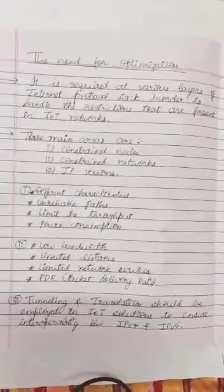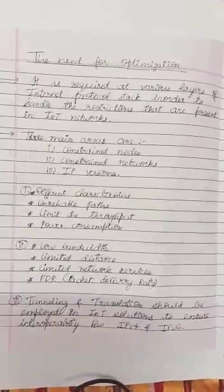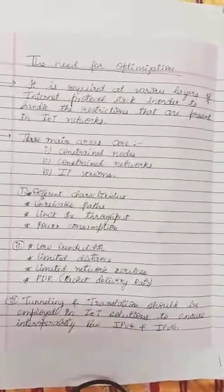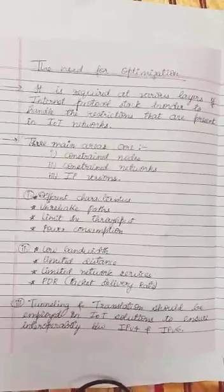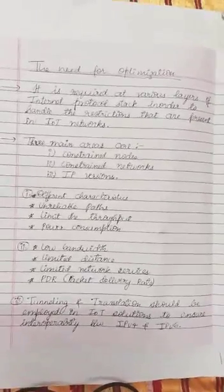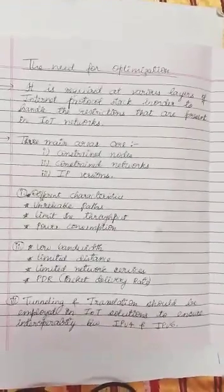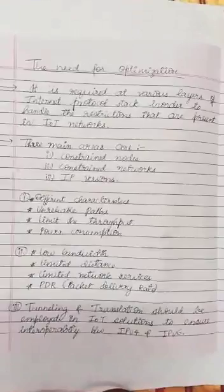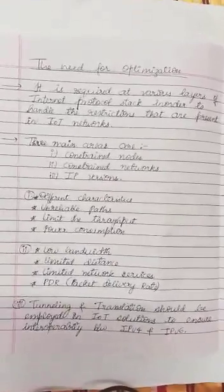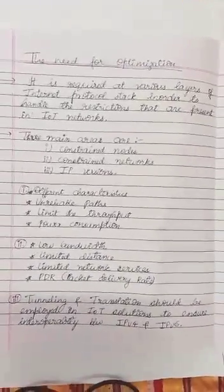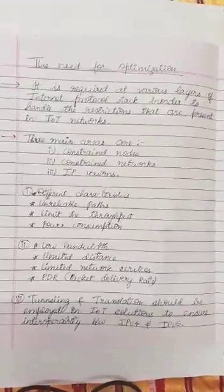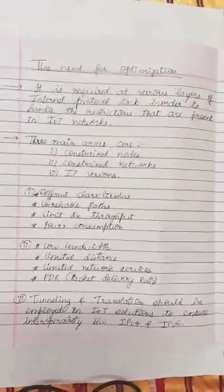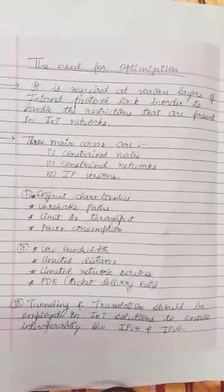Lastly, there is the power consumption issue. As you all know, IoT devices are already battery powered, and that battery will last from a few months to a few years. These are the problems caused in constraint nodes, and that is why we have to optimize them.